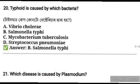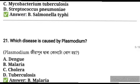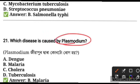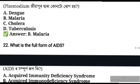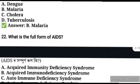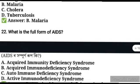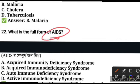Which disease is caused by Plasmodium? It is malaria. Plasmodium is a protozoa, and malaria is caused by protozoa. What is the full form of AIDS? AIDS stands for Acquired Immunodeficiency Syndrome.